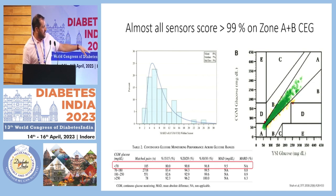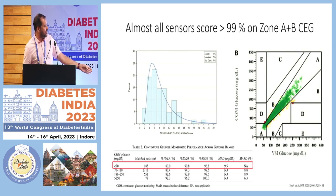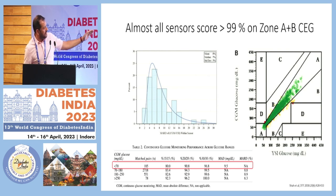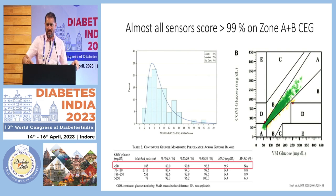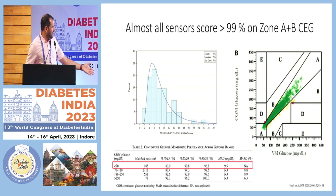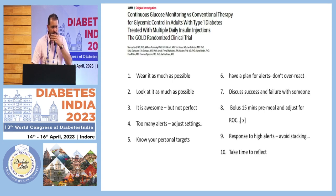There's something called an error grid. You plot real glucose on one axis and sensor glucose on the other. All sensors, when they fall into categories D and C, show a difference so big that a treatment decision error occurs — and that happens about 5% of the time. That's considered acceptable.